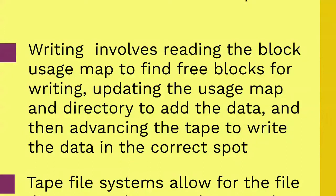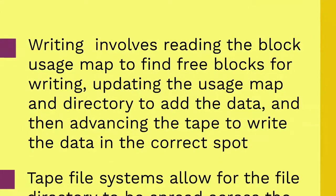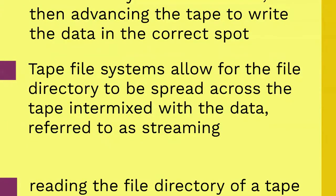Consequently, a master file directory and uses map can be extremely slow and inefficient with tape. Writing typically involves reading the block uses map to find free blocks for writing, updating the uses map and directory to add the data, and then advancing the tape to write the data in the correct spot. Each additional file write requires updating the map and directory and writing the data, which may take several seconds to occur for each file.